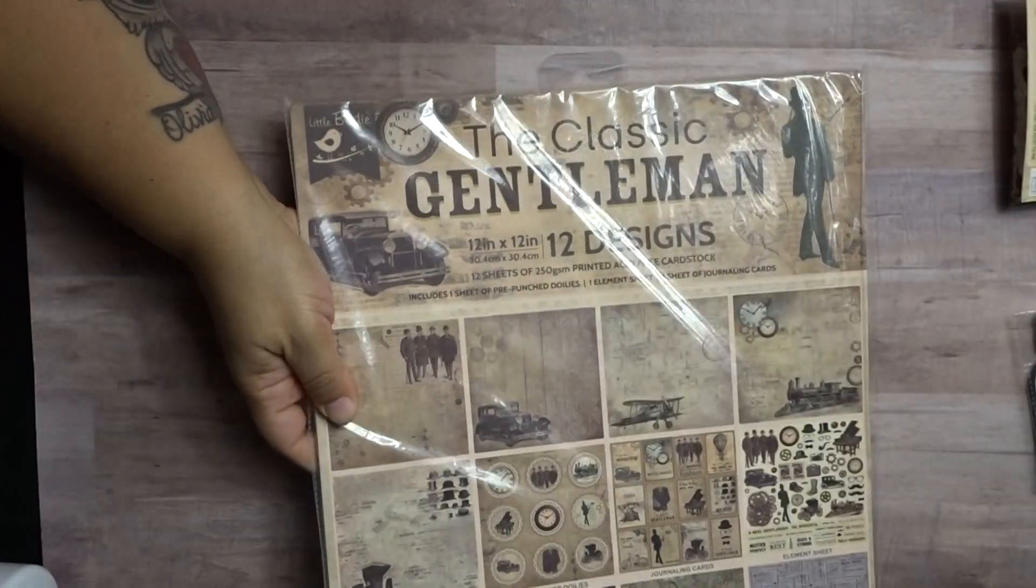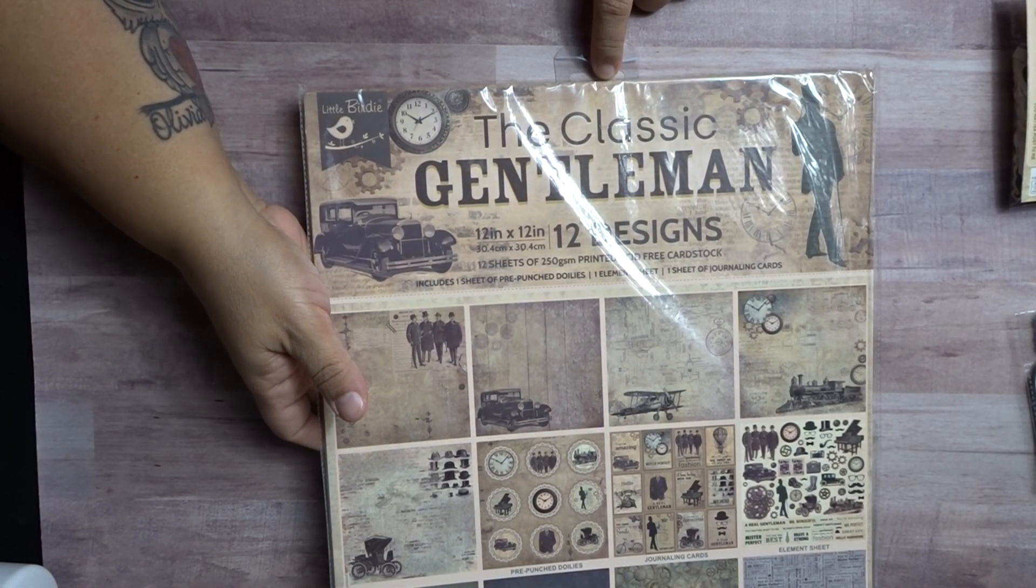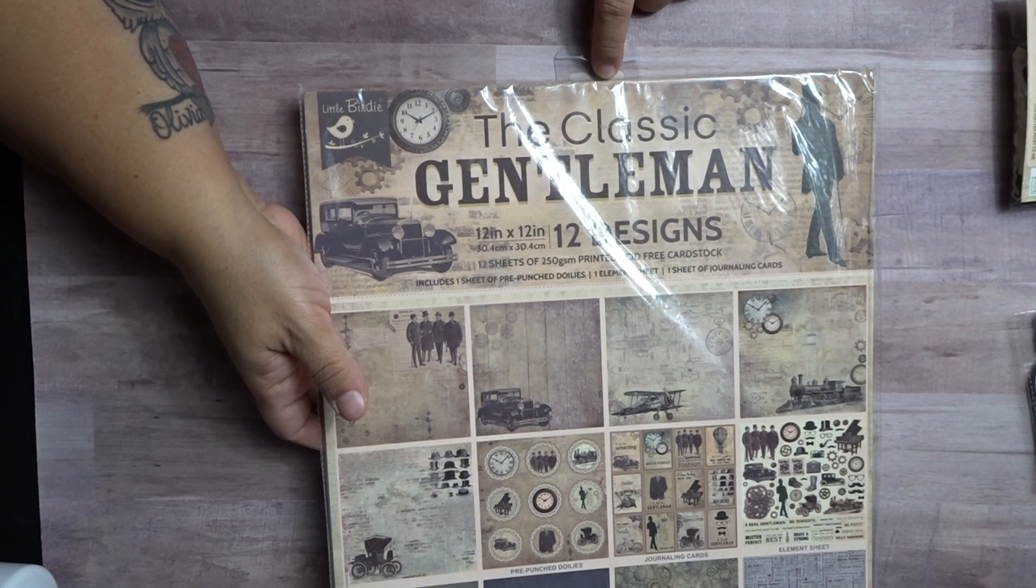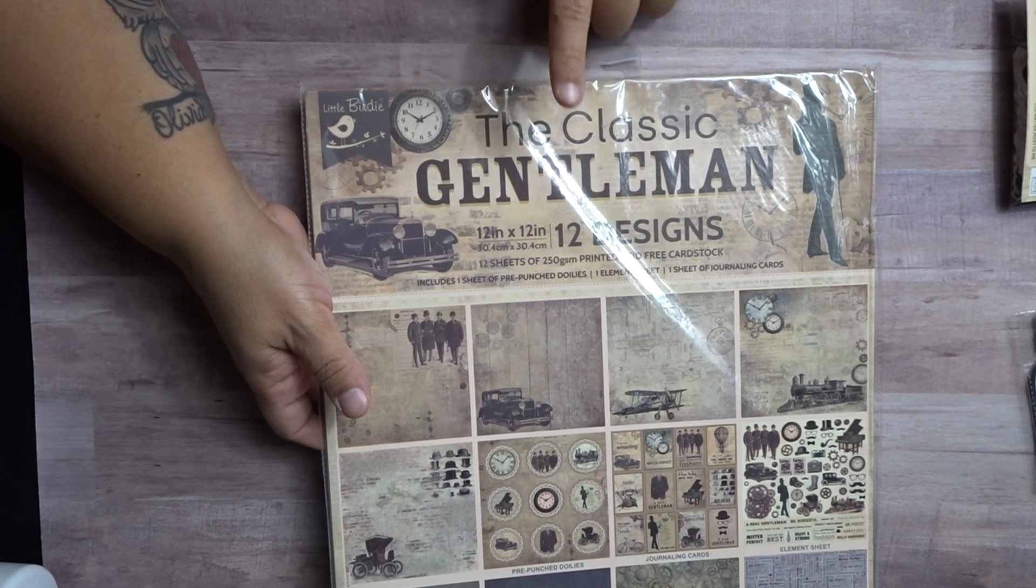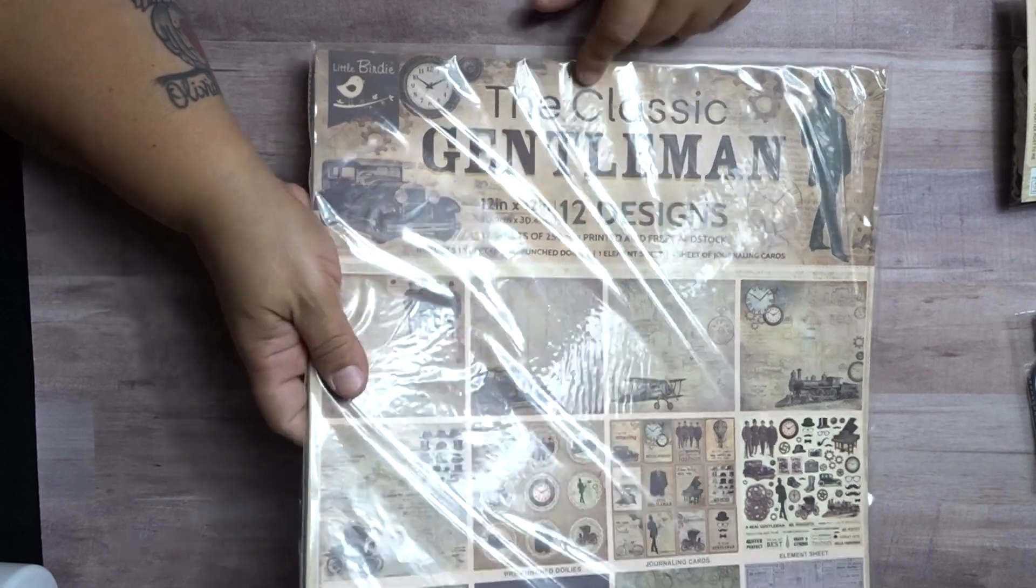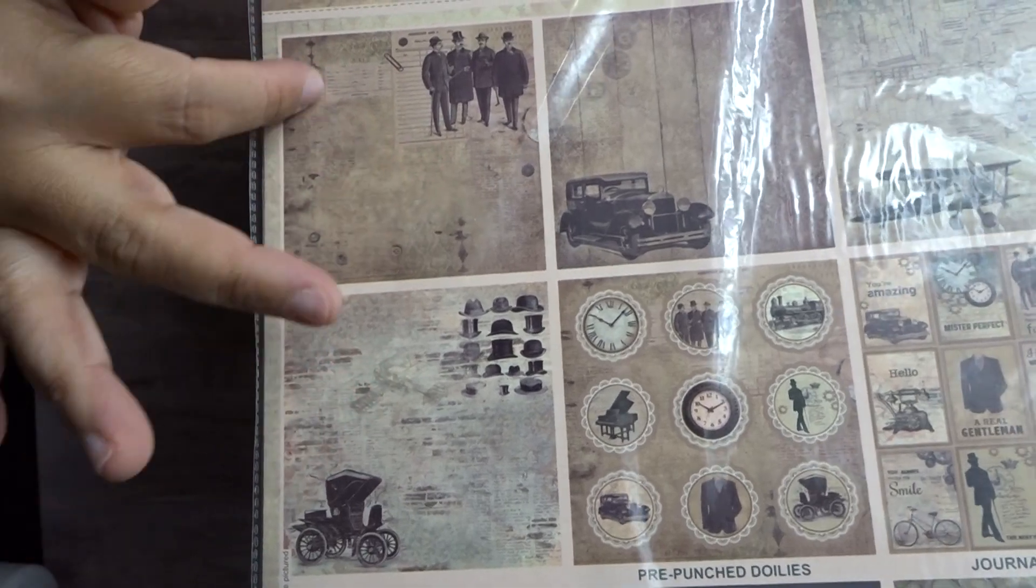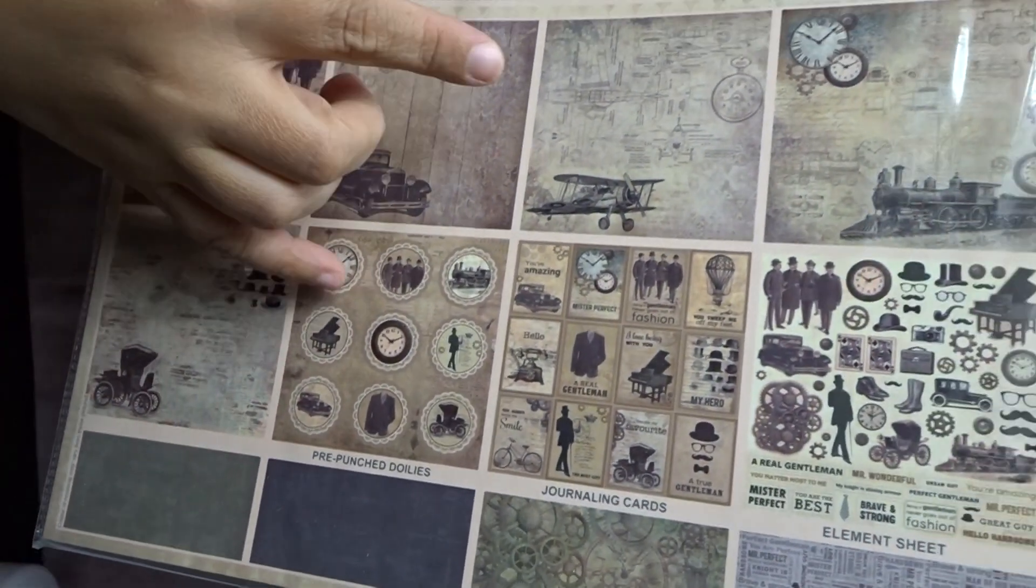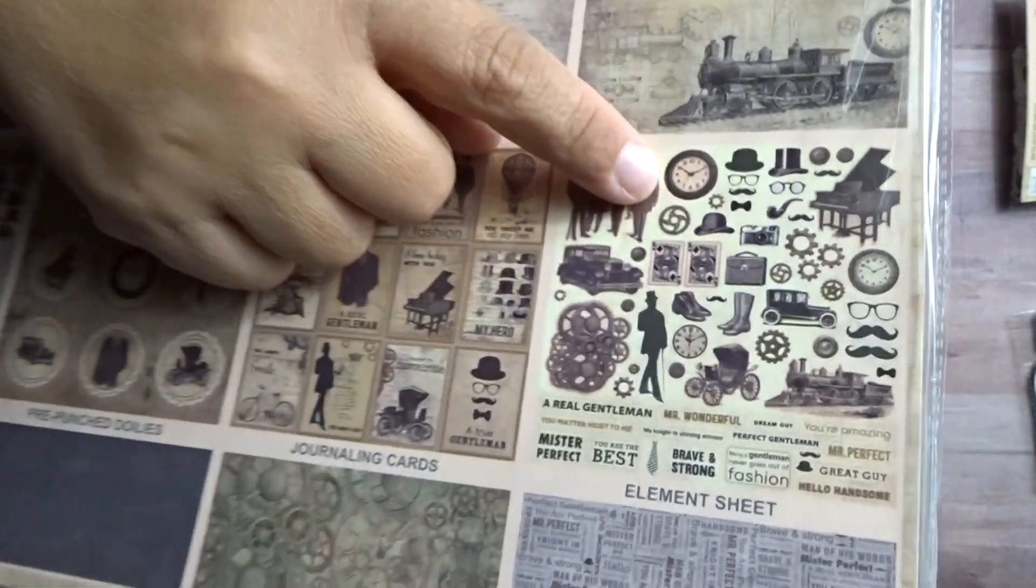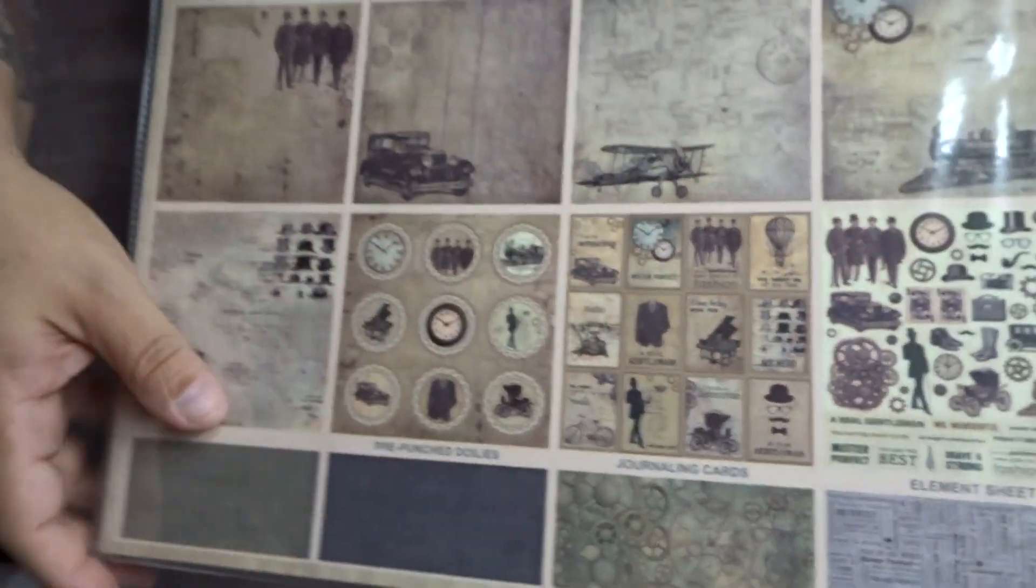Then, I also ordered the classic gentleman. Now, K.W. Clement. I think that's her name on YouTube. She showcased this paper and I fell in love. And it has the vintage men, just old patterns of hats, the clocks. The old uniforms and the little glasses and the boots and whatnot. I mean, it was just really, really pretty.